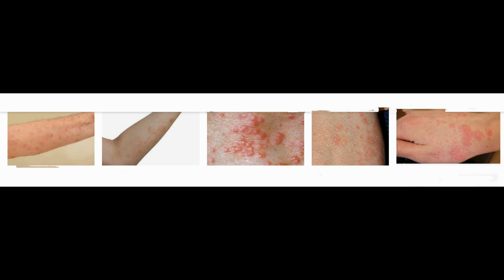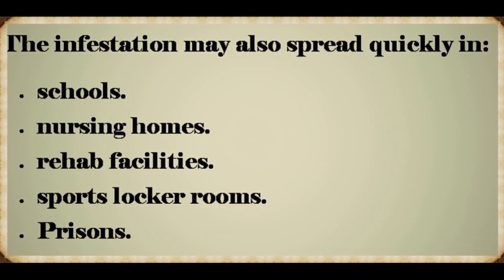Scabies is contagious. It can be spread through prolonged skin-to-skin contact such as holding hands, intimate personal contact such as sexual intercourse, and sharing clothing, bedding, or towels used by someone with a scabies infection. Since scabies is mostly transmitted through direct physical contact, the infestation can easily be passed to family members, friends, and sexual partners, and may also spread quickly in schools, nursing homes, rehab facilities, sports locker rooms, and prisons.